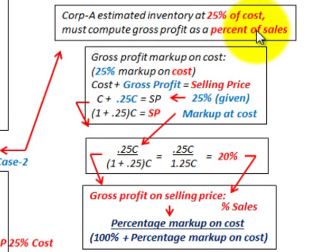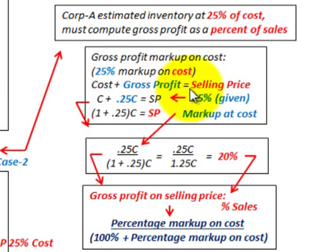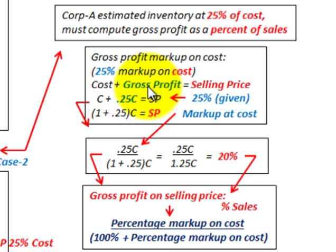We must compute the gross profit as a percentage of sales because that's what we'll subtract from net sales to find ending inventory. For the conversion, we use: cost plus gross profit equals selling price. With a 25% markup on cost, we get: cost × (1 + 0.25) = selling price, or 125% of cost equals the selling price.